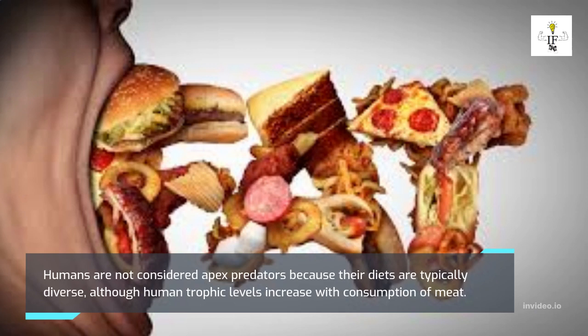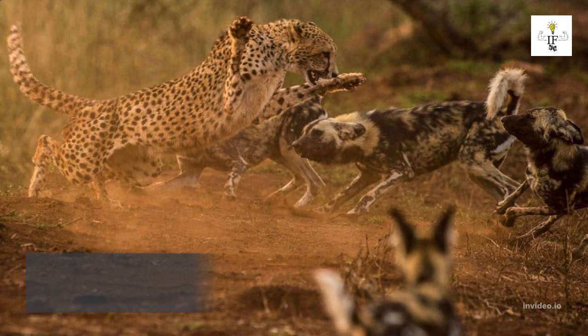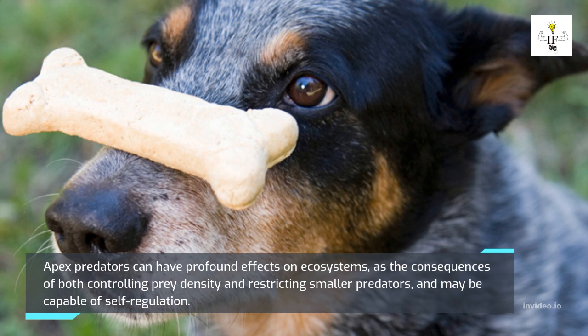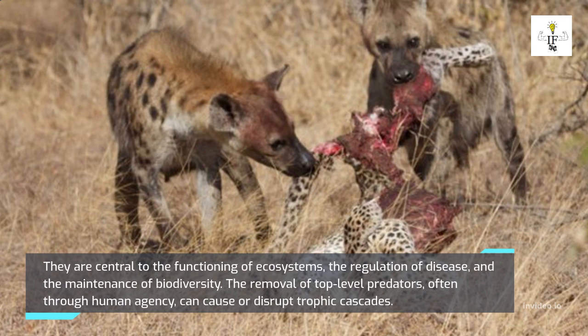Humans are not considered apex predators because their diets are typically diverse, although human trophic levels increase with consumption of meat. Apex predators can have profound effects on ecosystems, controlling prey density and restricting smaller predators. They may be capable of self-regulation and are central to the functioning of ecosystems, the regulation of disease, and the maintenance of biodiversity.